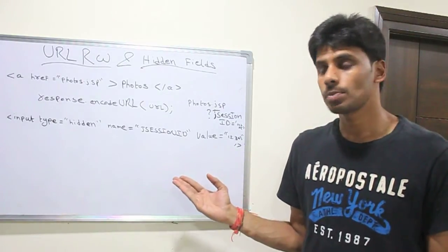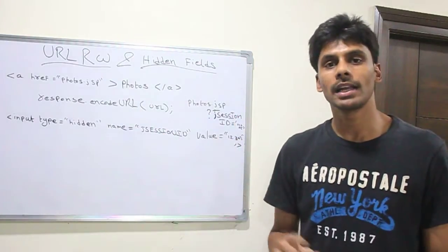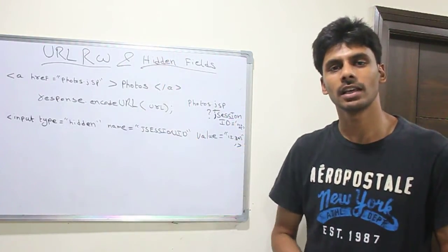The third way of doing session management or sending the token back and forth is hidden fields. In this case, when the user clicks on a link, he can see the J session ID and everything in the web browser.